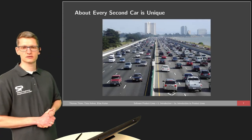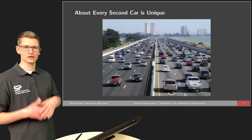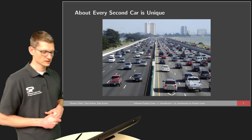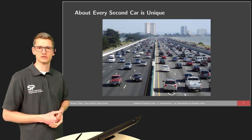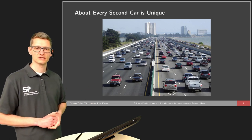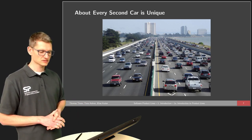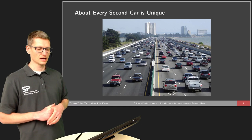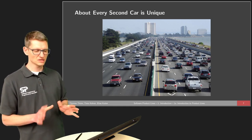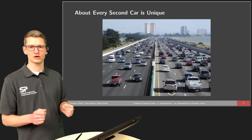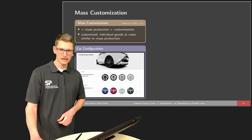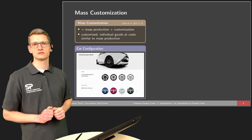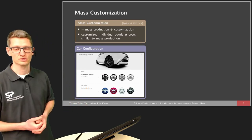When it comes to cars, they are actually kind of mass produced — many cars at comparably low prices. A single person, or even 100 people, cannot build a car. The interesting insight from the automotive industry is that about every second car is unique. So it's not really mass production, but a mixture of mass production and customization. That's what is known as mass customization.